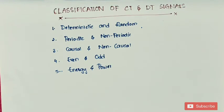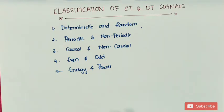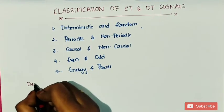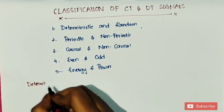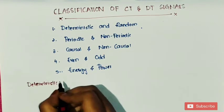In today's session let us discuss about deterministic and random signals, and periodic and non-periodic signals. The first one is the deterministic signal. In deterministic signals, there is no uncertainty of its magnitude and phase at any given instant of time.